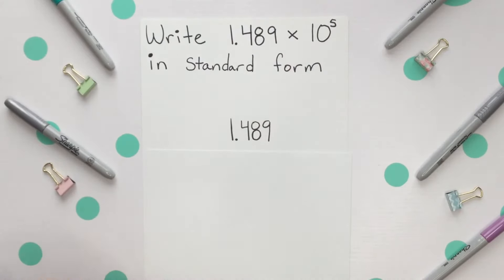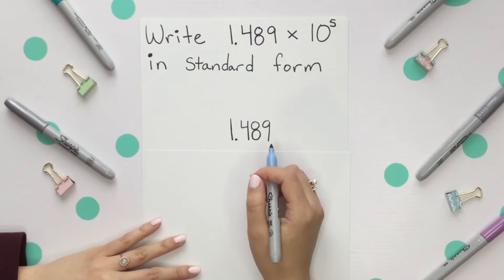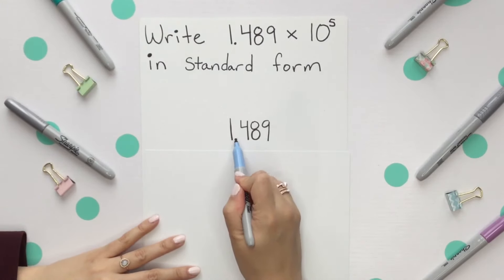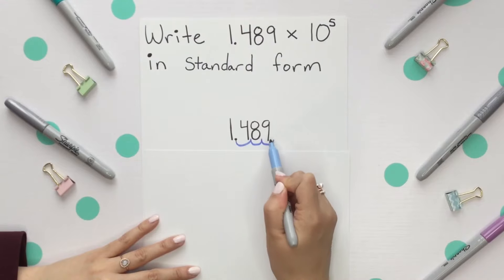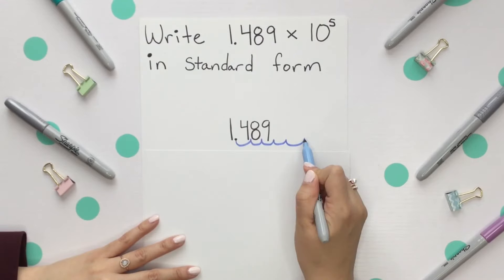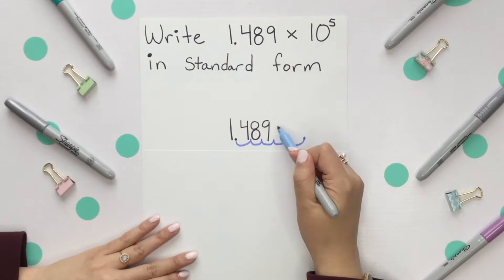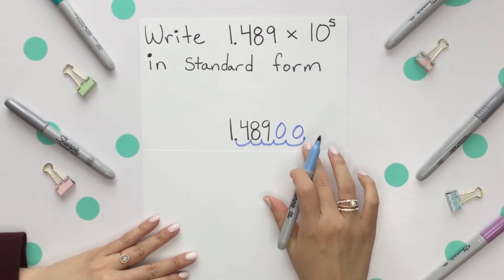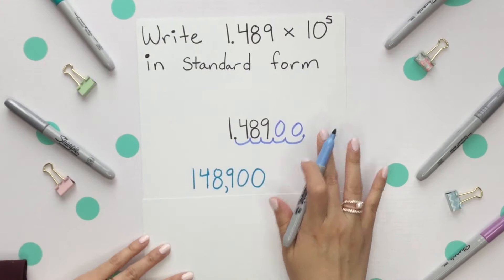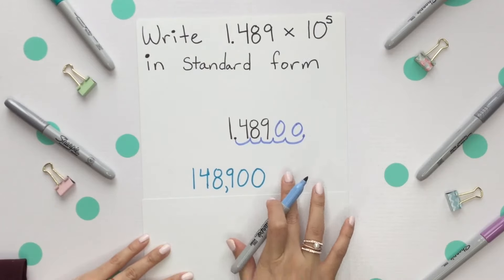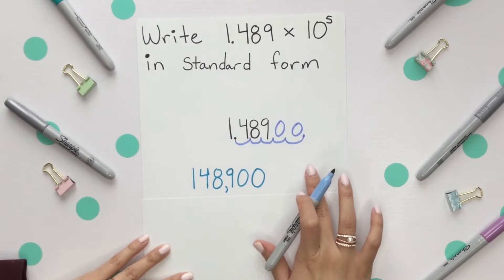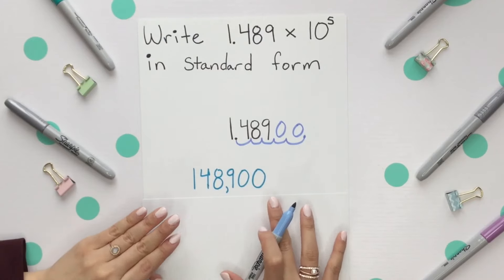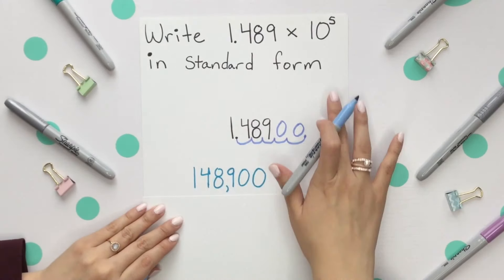From that decimal place we're going to move to the right 5 times: 1, 2, 3, 4, 5 — placing the decimal place there, which really means it's gone. Those empty spaces would be filled with 0s. The reason the decimal place is gone is because it's now a really large number and there's no need for a decimal since there are no digits following. So this is our correct number in standard form.